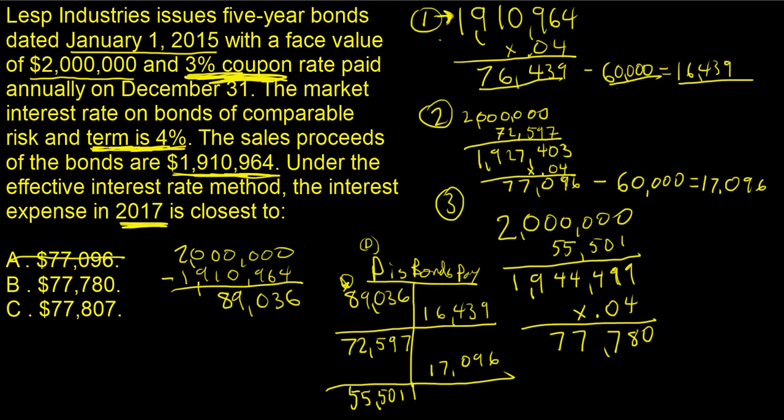And so if you try to jump ahead and say, oh, I bet you they have two different payments on there, three different payments on there. And you put C, you would have gotten it wrong. The correct answer is B, $77,780 is the correct answer. And that's what's right. This is a very long problem.